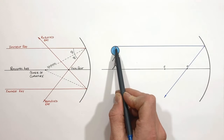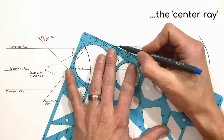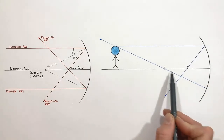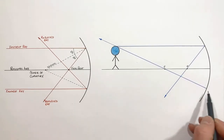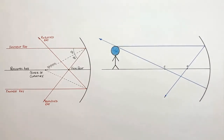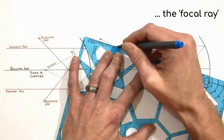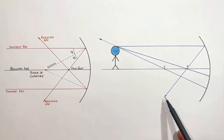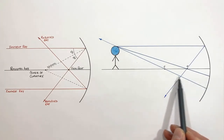The next ray starts at the top of this person's head and passes through the center of curvature on its way to the mirror. As this ray passes through the center of curvature and heads towards the mirror, it is traveling parallel to the normal vector, or perpendicular to the surface of the mirror itself. That means the ray is going to turn around and bounce right back along the line on which it came. Last, we have the ray which starts at the top of this person's head and passes through the focal point. Much like the ray that came in parallel to the principal axis and bounced out through the focal point, this ray is going to bounce off the mirror parallel to the principal axis.